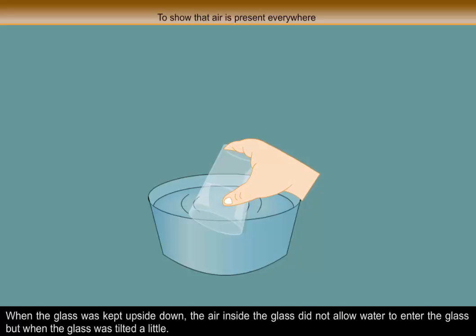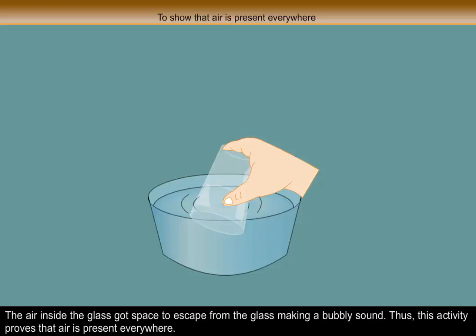When the glass was kept upside down, the air inside the glass did not allow water to enter the glass. But when the glass was tilted a little, the air inside the glass got space to escape from the glass making a bubbly sound.